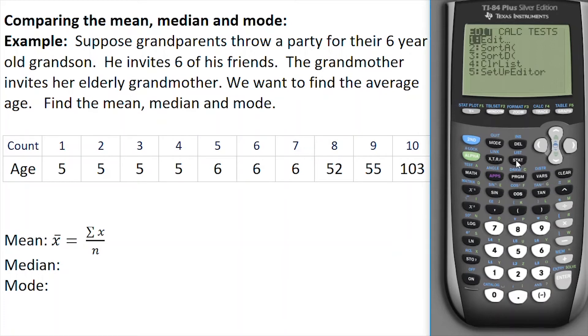If I hit stat and then edit, I can input all of the ages into list 1. You can see I pre-populated list 1. And second quit gets me back to the home screen. If I hit stat and scroll over to calc and choose one variable statistics, I want to make sure that it says my list is in list 1, which it is, and go down to calculate. I can see the mean here is 24.8, and when I scroll down, I can also see the median is 6.